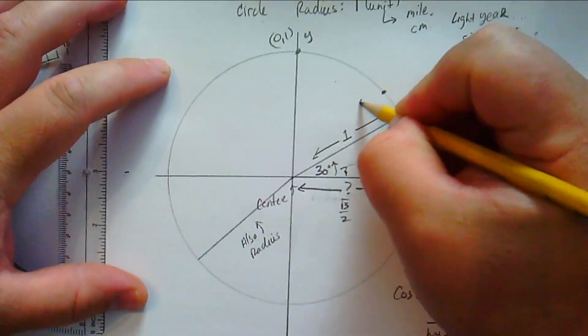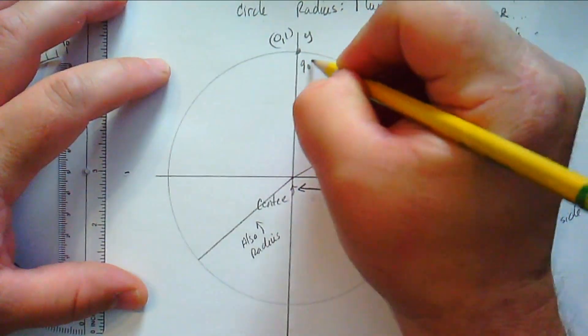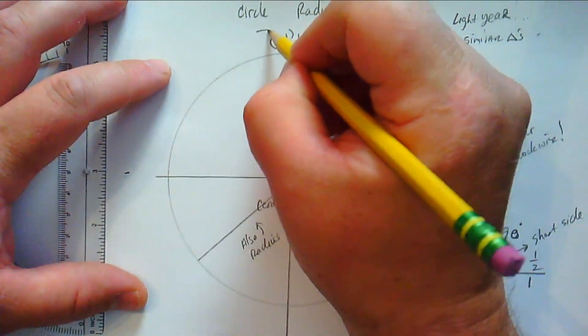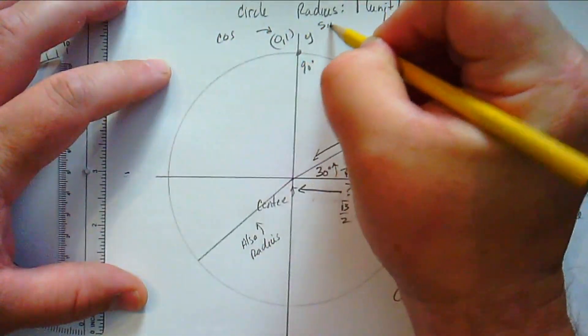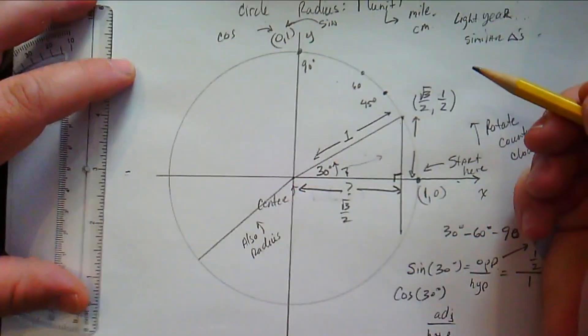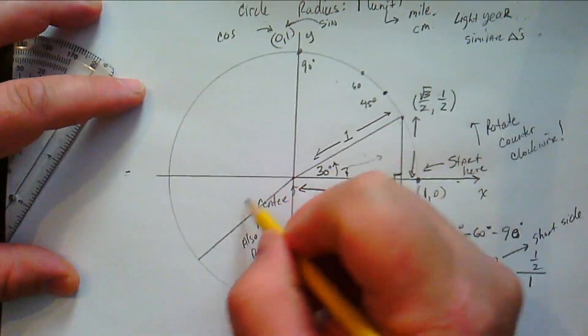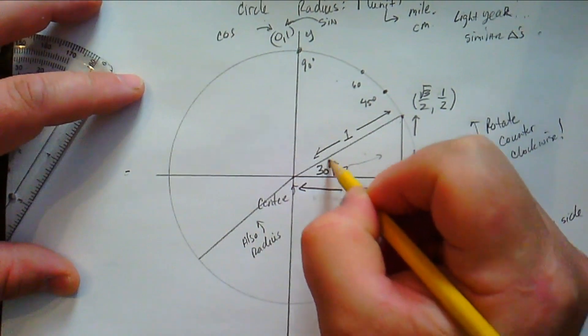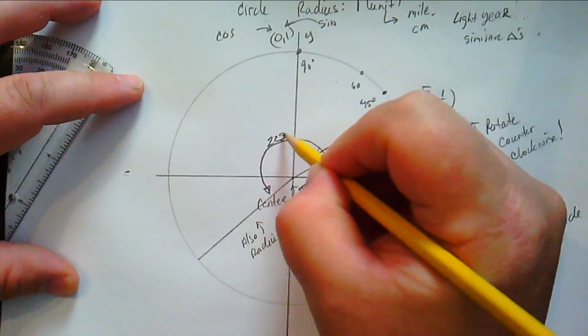And the y-coordinate is sine. So we also have on here the 45 degrees and multiples of 45, and we also have 60 degrees and multiples of 60. So it's going to turn out to be the case that the x is the cosine and y is sine.